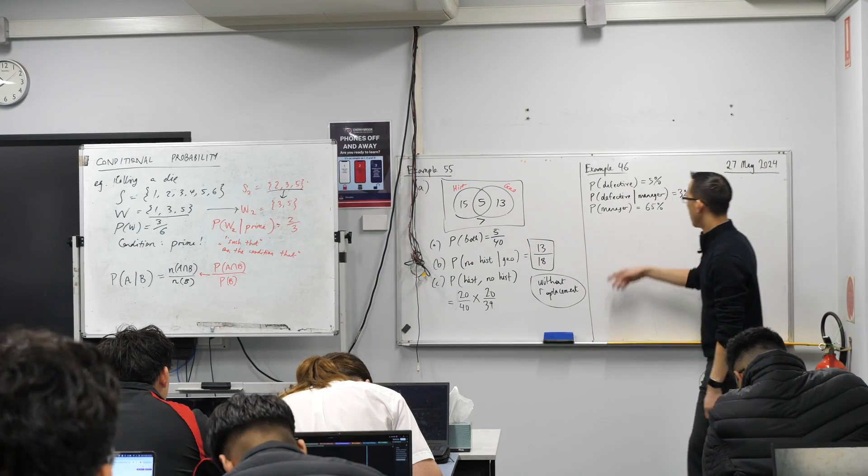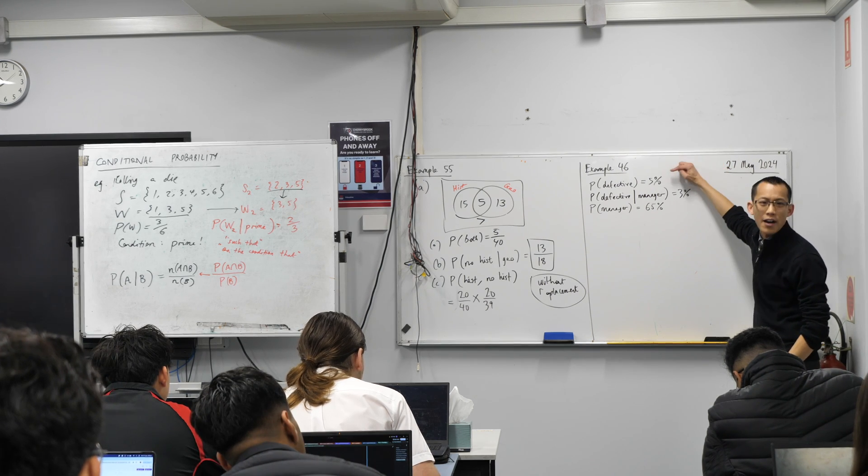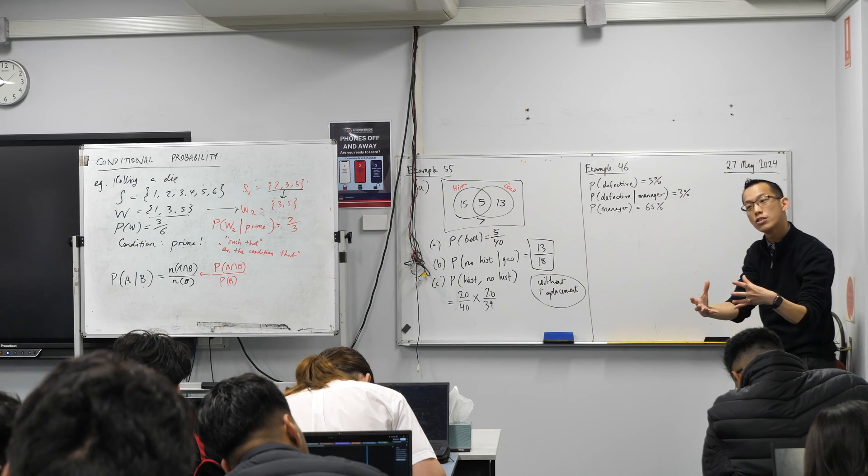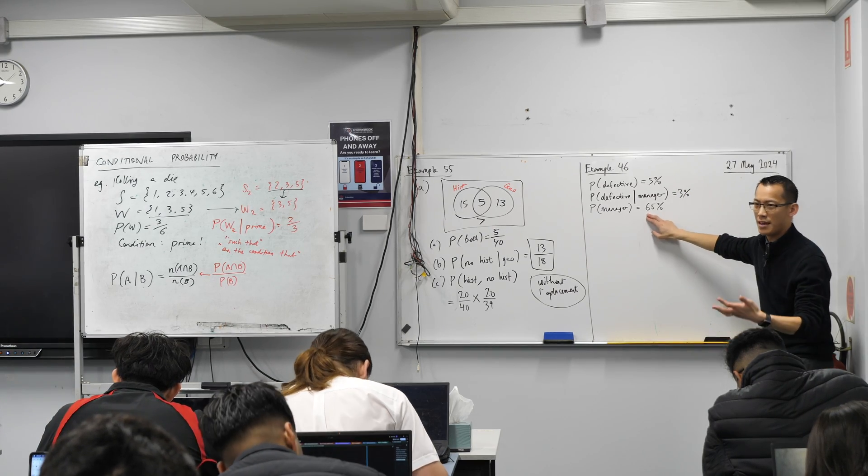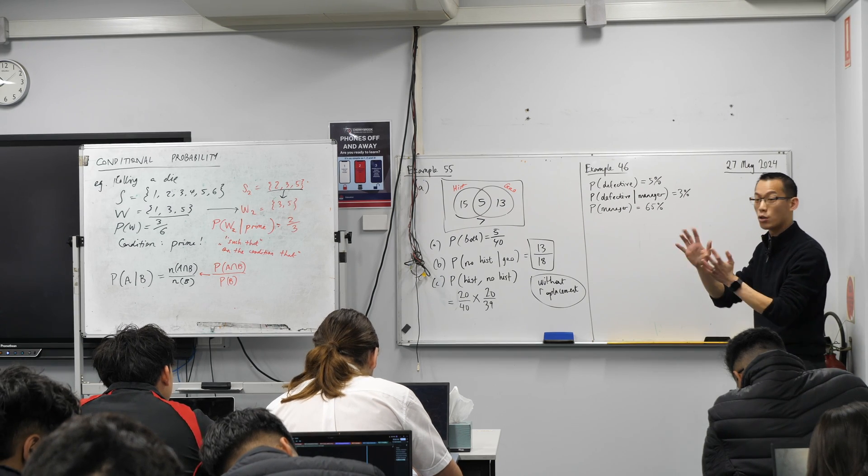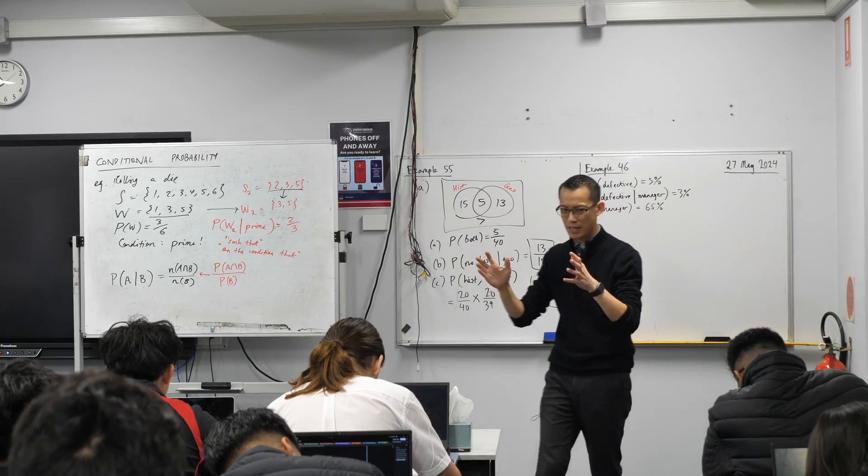I'll give you an obvious one. What's the probability that the thing is not defective? 95%. So there's more information you can work out pretty easily that's going to go onto this tree diagram. What's the probability of there not being a manager there? Have a think about how you draw the tree. There's more than one way to do it, but there are easier and harder ways. I'll give you a couple minutes.